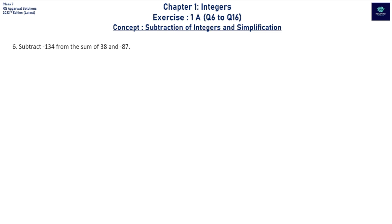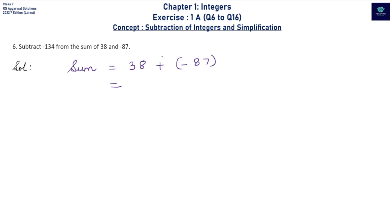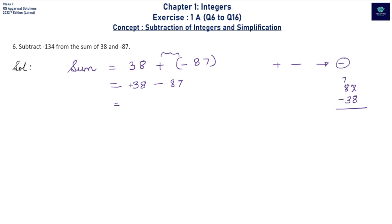Coming to question number 6: subtract -134 from the sum of 38 and -87. First we calculate the sum of these two integers. Sum = 38 + (-87). Whenever two signs are together we merge them, so plus and minus becomes minus, giving 38 - 87. Since 87 has a minus sign, we subtract: 87 - 38 = 49, giving us -49.